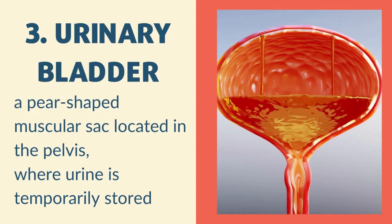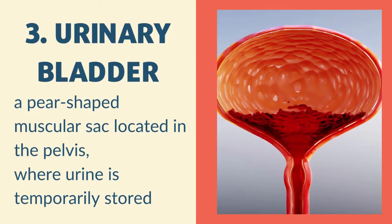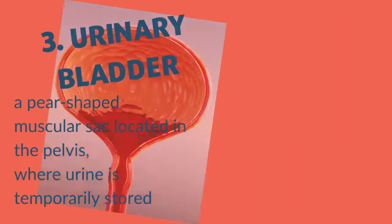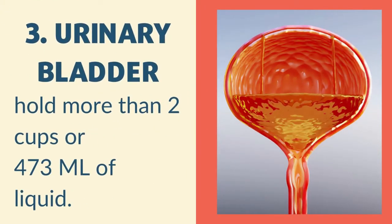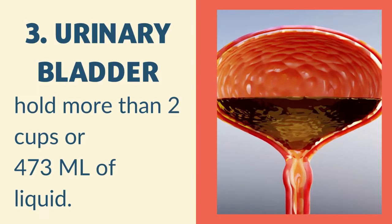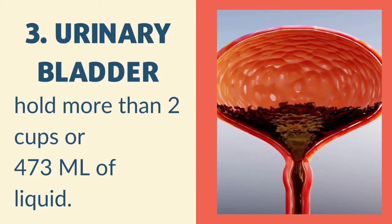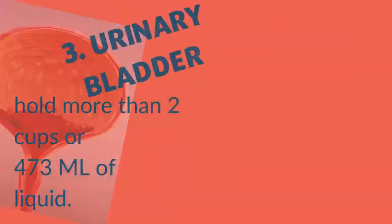The third one is the urinary bladder, which is a pear-shaped muscular sac located in the pelvis where urine is temporarily stored. The urinary bladder holds more than 2 cups or 473 ml of liquid.